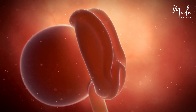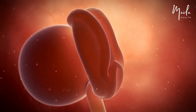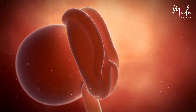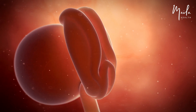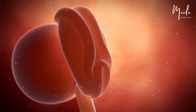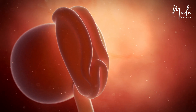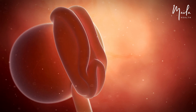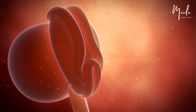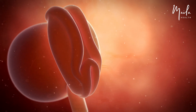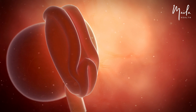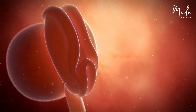The blastocyst cells form layers that are developing into the embryo, yolk sac, and the future amniotic sac and placenta. The yolk sac will temporarily nourish the embryo until the placenta develops. Despite the yolk sac's name, human yolk sacs contain no yolk.